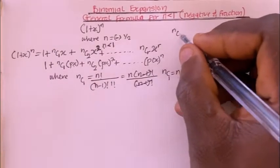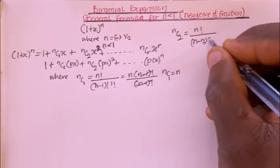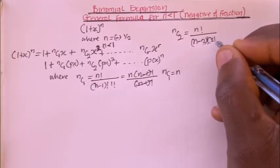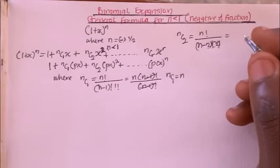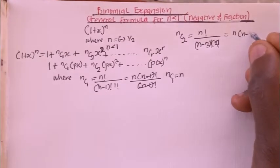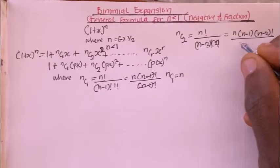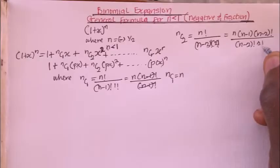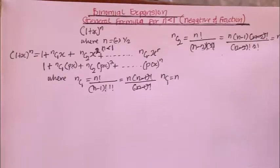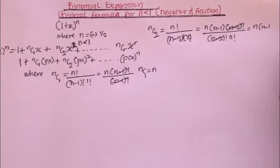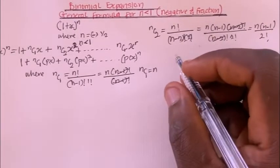And nC2 is the same as n factorial divided by (n−2)! times 2!, which simplifies to n(n−1)(n−2)! divided by (n−2)! times 2!, giving us n(n−1) divided by 2 factorial.